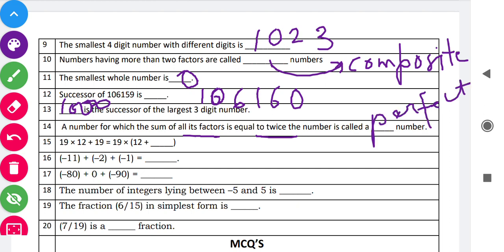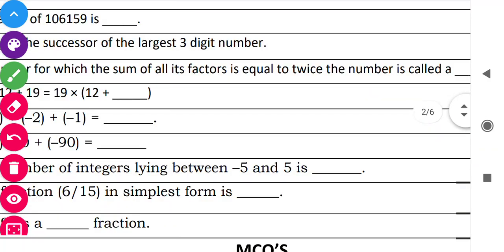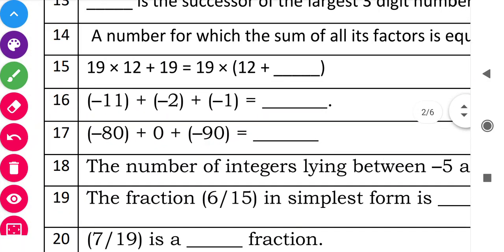Now you can see question number 15. I will slightly zoom in so you can see easily. Question 15: '19 multiplied by 12 plus 19 is equal to 19 multiplied by blank.' By the distributive property, you factor out 19: 19 times (12 + 1) = 19 times 13. So the answer in the blank is 13.